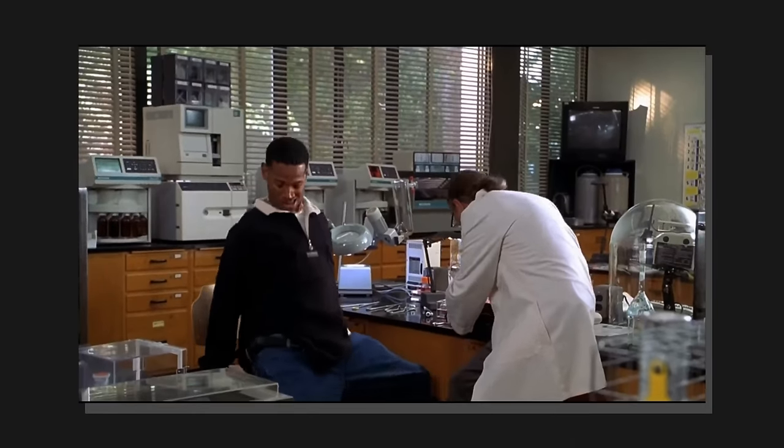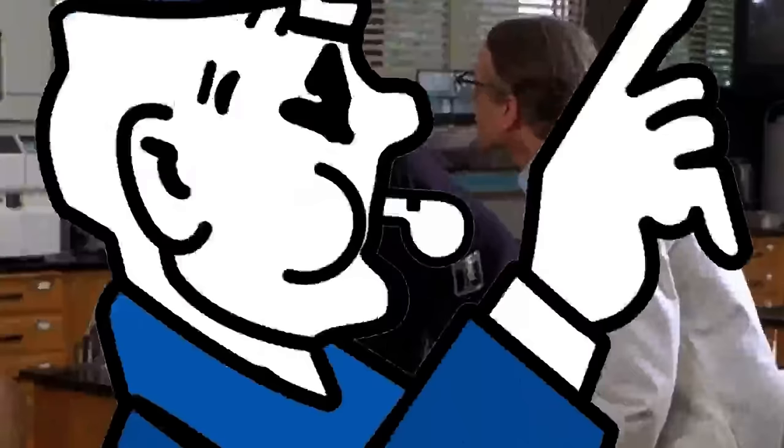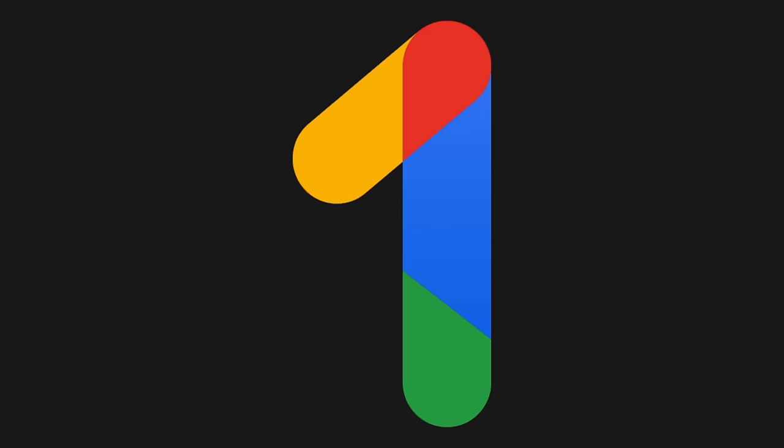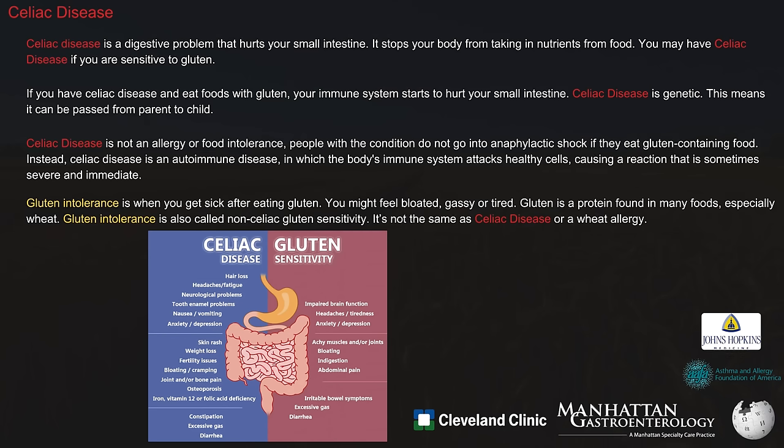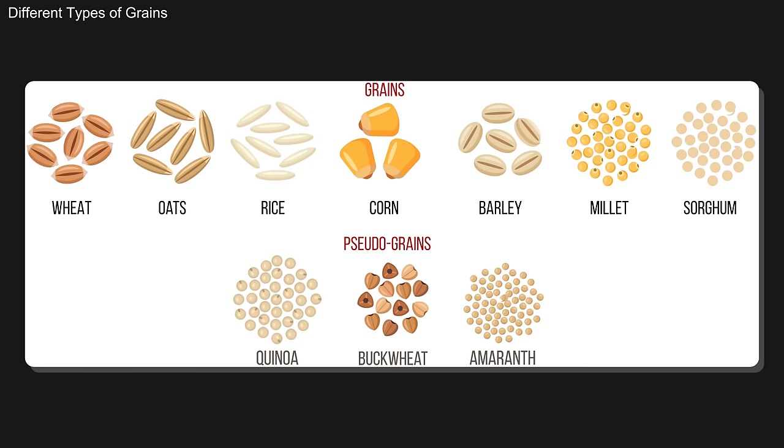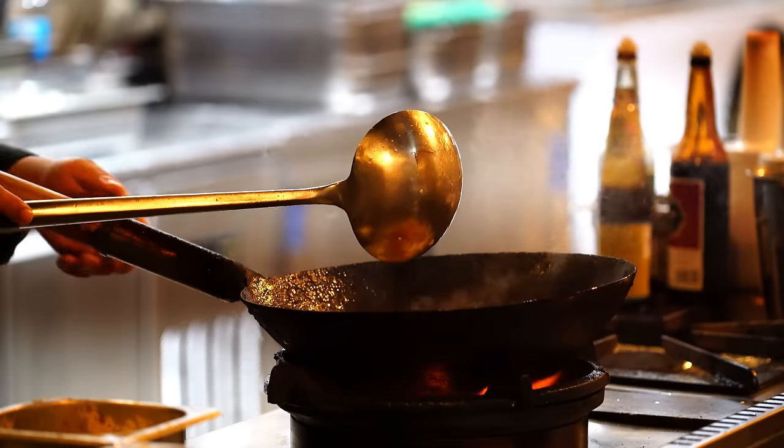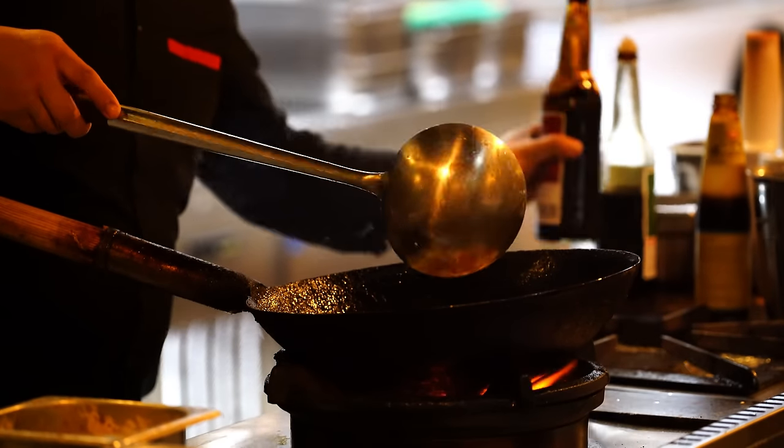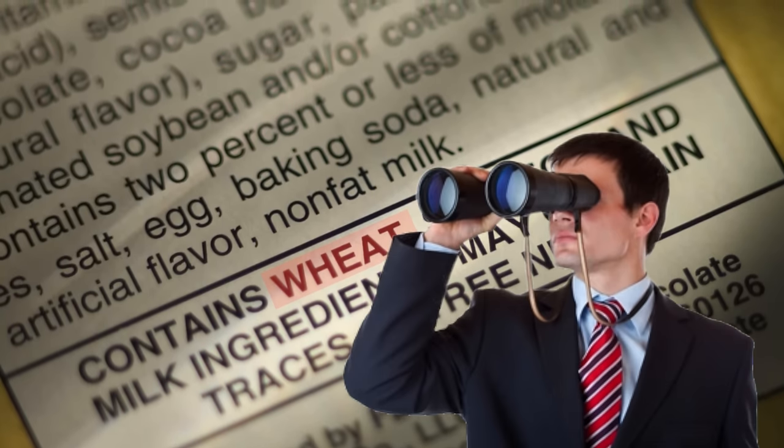While anything could technically be considered an allergen, there are some allergens that a lot more people tend to get than others. There are some irritating substances that are sometimes erroneously referred to as allergens, when they're not actually allergens. One example of a condition which isn't an allergy but commonly gets referred to as an allergy is celiac disease. However, this is just a digestive condition, and not an actual allergy. Celiac disease is a condition which is marked by sensitivity to gluten.